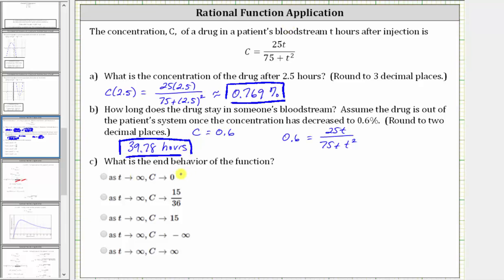And then finally, part C. We're asked to determine the end behavior of the function as T approaches infinity. Looking at the concentration function, we can determine the end behavior by analyzing the degree of the numerator and denominator. Notice how the degree of the numerator is degree one, and the degree of the denominator is degree two. Because the degree of the denominator is higher than the degree of the numerator, as T approaches infinity, the denominator increases faster than the numerator.